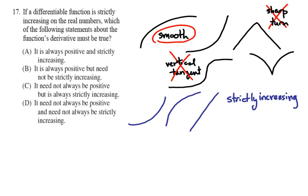Which of the following statements about the function's derivative must be true? Remember that a function's derivative is the slope of the line that is tangent to the curve at any particular point — like the two red straight lines I drew onto the first blue curve there.